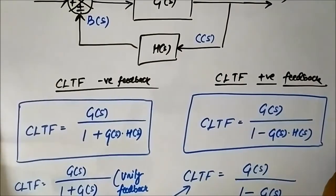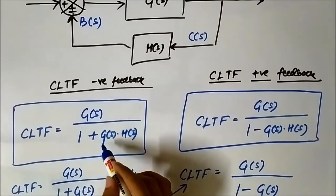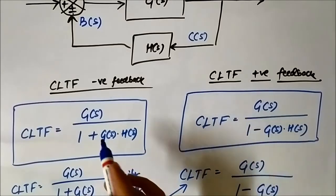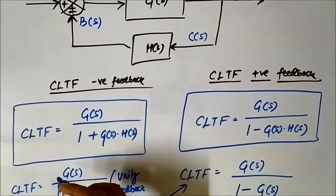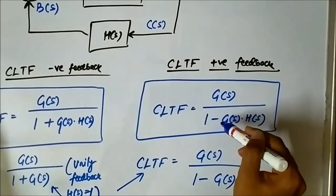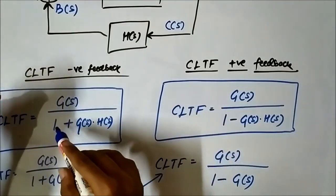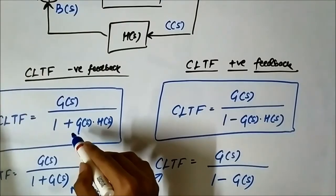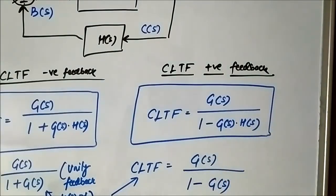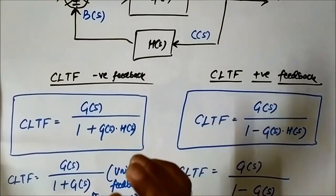In the negative feedback case, the denominator [1 + G(s)·H(s)] is larger than the denominator [1 − G(s)·H(s)] in the positive feedback case. This means the gain of the closed-loop system is actually less with negative feedback than with positive feedback. In real-life situations, however, the negative feedback connection is far more commonly used.